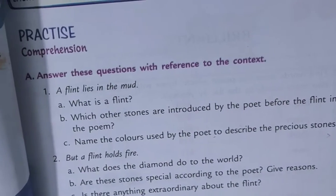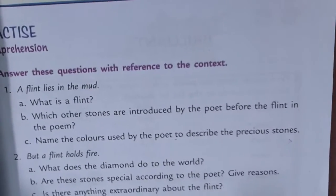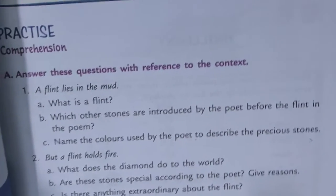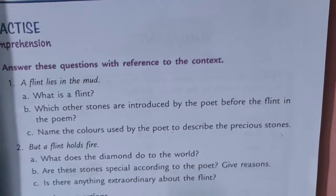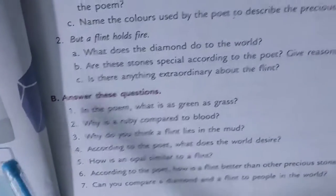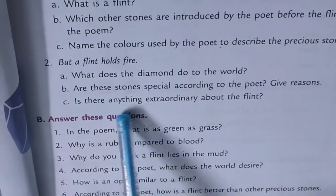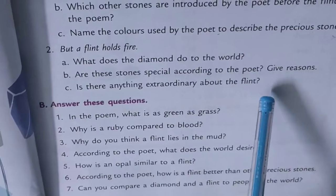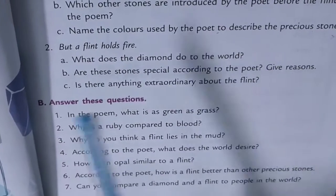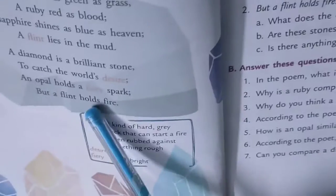Because diamond is precious and catches the world's desire, whereas flint holds fire. And these are emeralds, the green and precious stones. Sapphire - blue, ruby - red, the colors are there. Is there anything extraordinary about the flint? Yes, only flint holds fire.